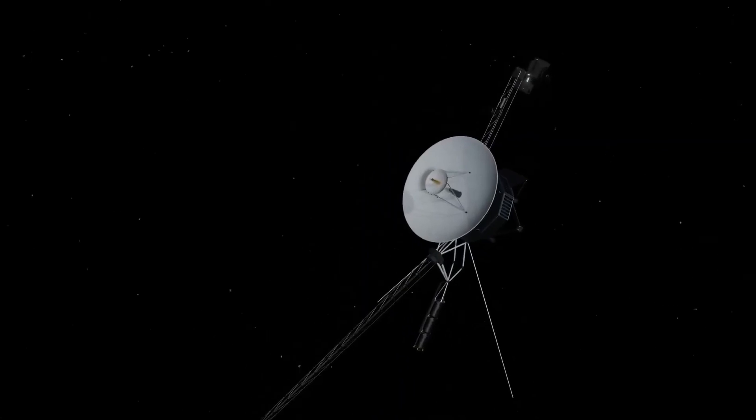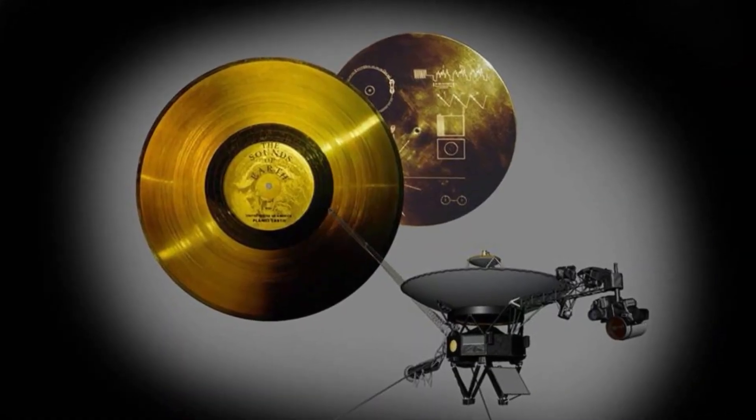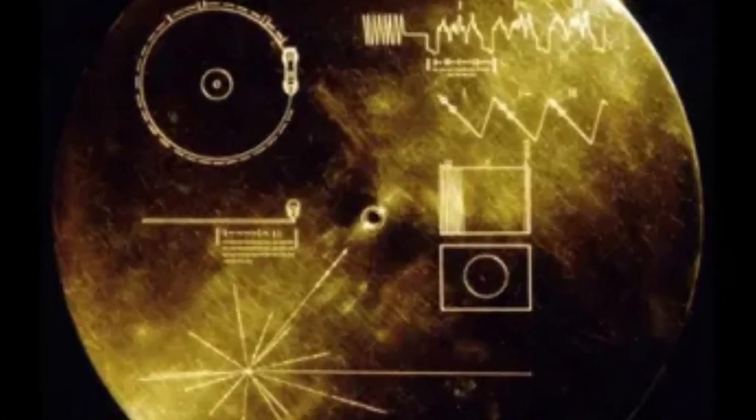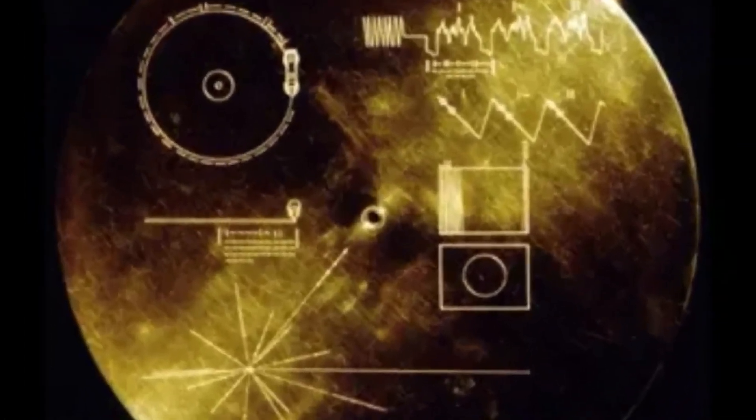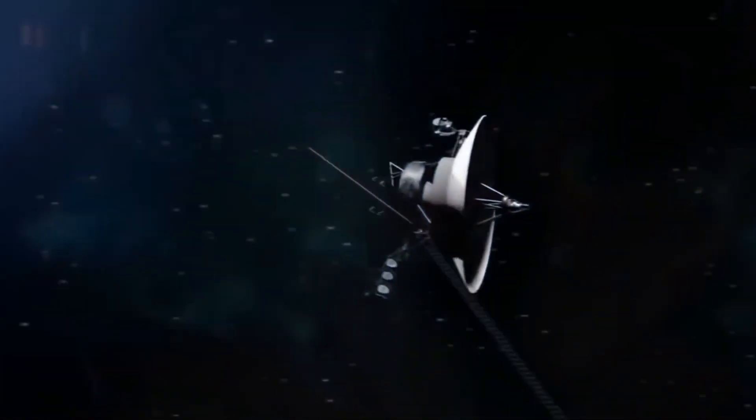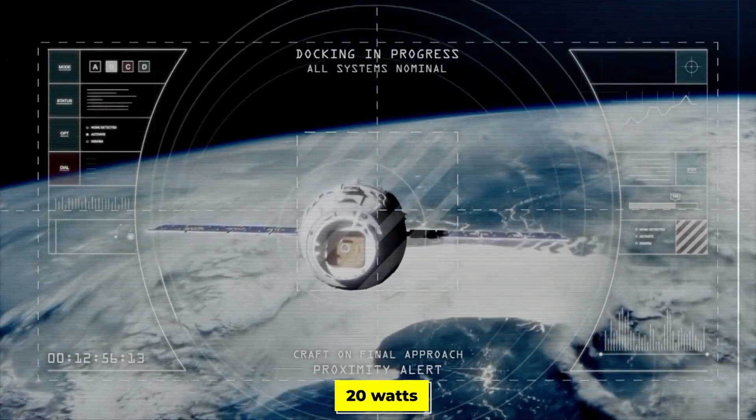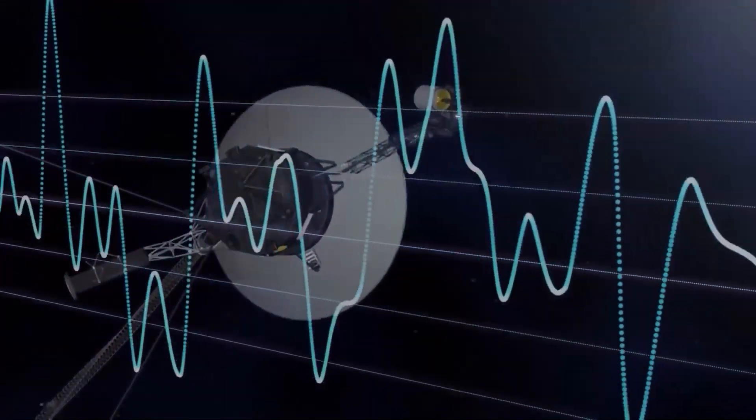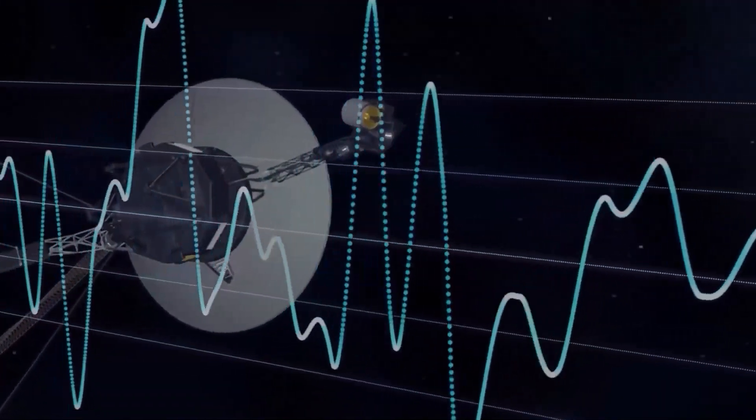The probe carries with it the famous golden record, a 12-inch gold-plated copper disk containing sounds, images, and music selected to portray the diversity of life and culture on Earth. Now over 14 billion miles from home, Voyager's faint signal with a power output of about 20 watts takes over 21 hours to reach Earth, where it's captured by NASA's deep space network of radio telescopes.